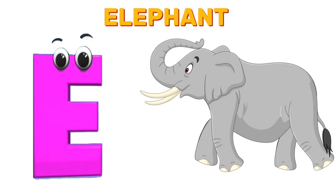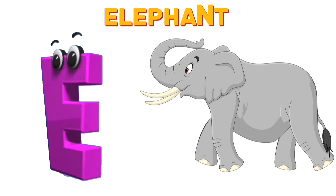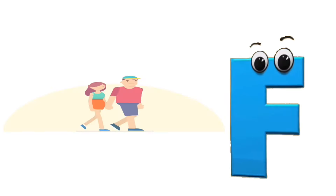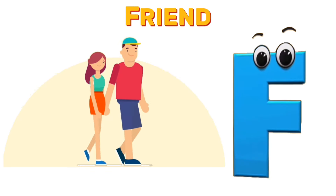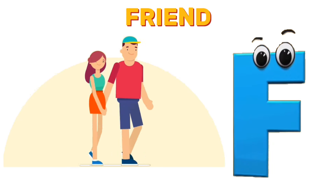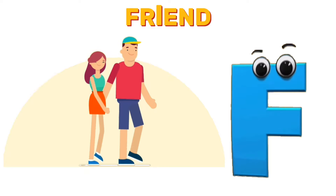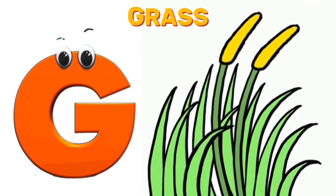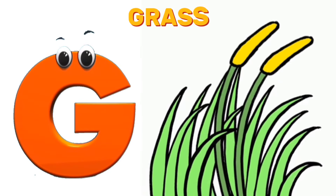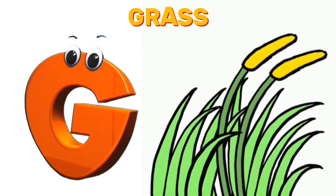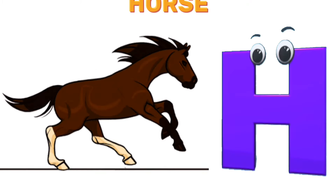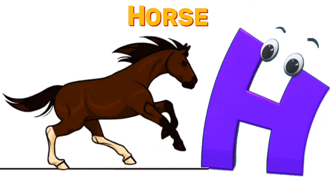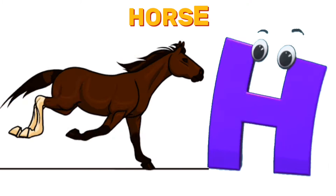E is for elephant. Elephant. F is for friend. Friend. G is for grass. Grass. H is for horse. Horse.